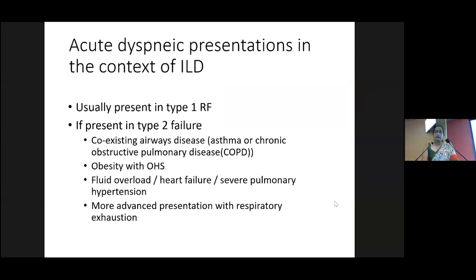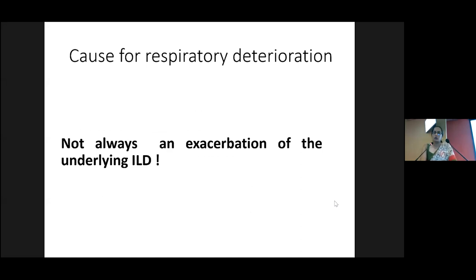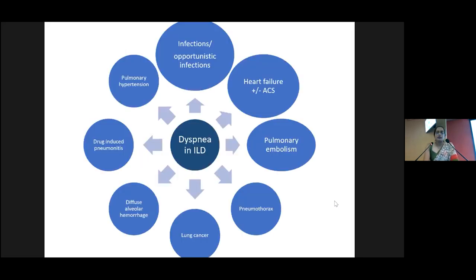When patients with ILD present with an acute worsening, they usually present with type 1 respiratory failure, but sometimes type 2 — in which case we have to think of coexisting COPD resources, obesity hypoventilation syndrome, or more advanced presentation with muscle fatigue and respiratory exhaustion. Is it always an exacerbation? No — there are many other causes to look into. Excluding non-respiratory causes like anemia, there are more than eight respiratory-related diagnoses that can cause respiratory decompensation in a patient with ILD. A good clinical history and thorough physical examination will guide us toward identifying the most likely scenario.